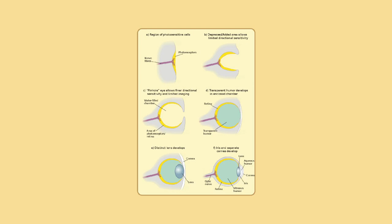Rapid eye movement (REM) typically refers to the sleep stage during which the most vivid dreams occur. During this stage, the eyes move rapidly. Saccades are quick, simultaneous movements of both eyes in the same direction controlled by the frontal lobe of the brain. Even when looking intently at a single spot, the eyes drift around.